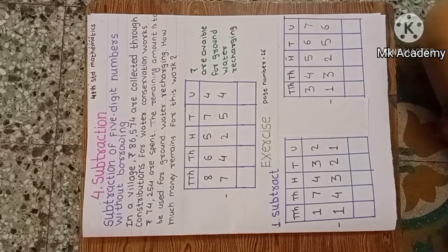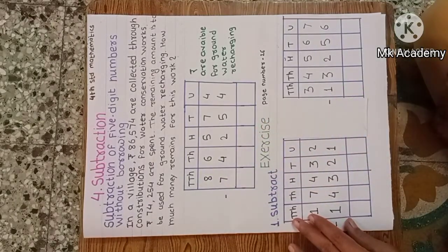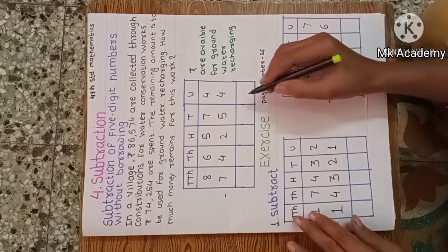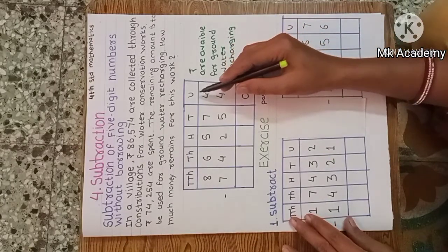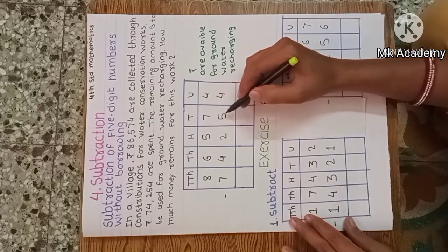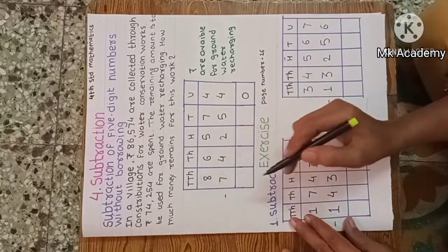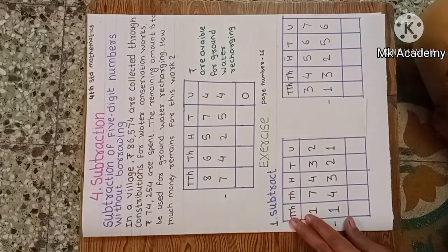In the last video we saw subtraction of four-digit numbers. This subtraction is also the same, but here we have five-digit numbers. Only one new place is added, called ten thousands. We start from the unit place. Subtraction always starts from the unit place first: unit to unit, then tens to tens, then hundreds to hundreds, then thousands to thousands, and now the new place — ten thousands to ten thousands. This is the vertical arrangement of subtraction.